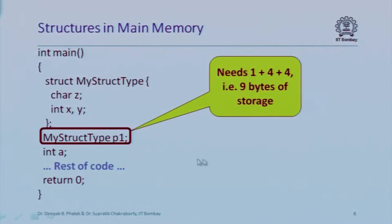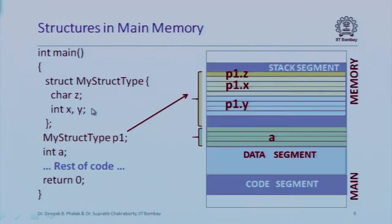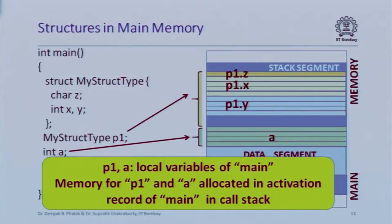How many bytes would we need for p1? p1 is an object of my_struct type, so it needs two integers and a character. Each integer requires four bytes, so that's eight bytes plus one byte for the character, totaling nine bytes. In memory, the storage allocated for p1 would have one byte reserved for member Z, four bytes for X, and four bytes for Y. Local variables are allocated space in the stack.